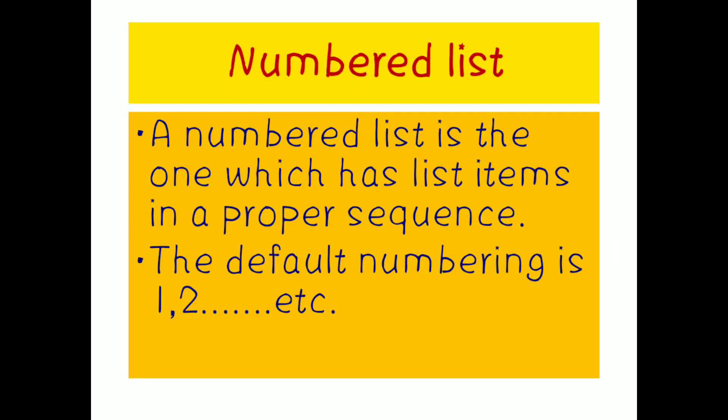Numbered list means we will be having numbers 1, 2, 3, and so on. So what should I do? I should follow a sequence. That means after 1 only I should write 2, and after 2 only I should write 3. We cannot write 3 after 1, and after 2 I cannot write 1. So in a numbered list we will have a proper sequence, whereas in a bullet list we won't have any sequence. Sequence means order.